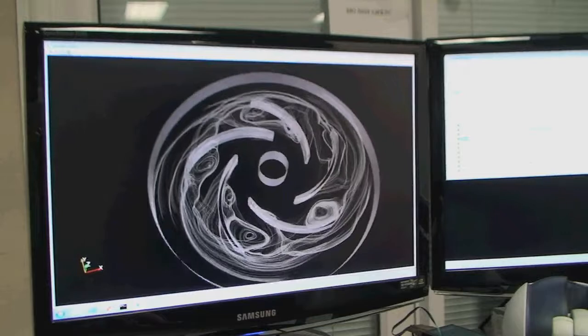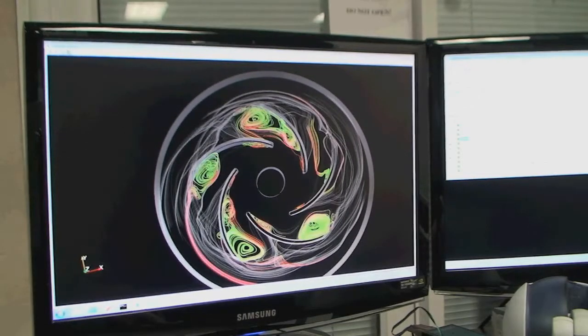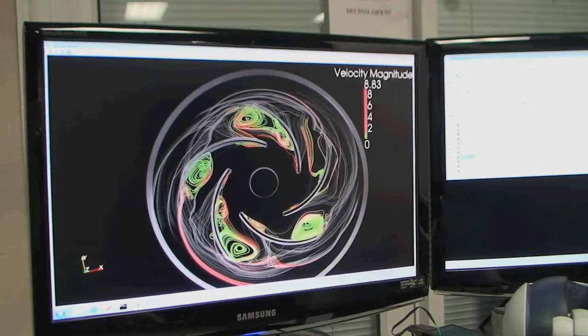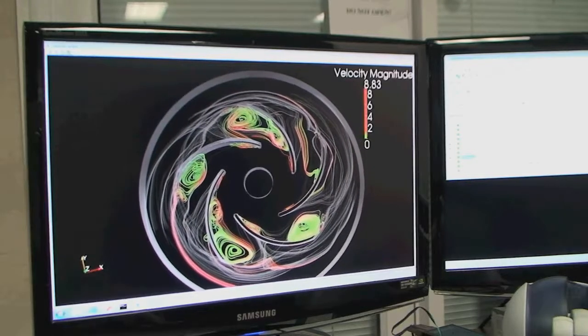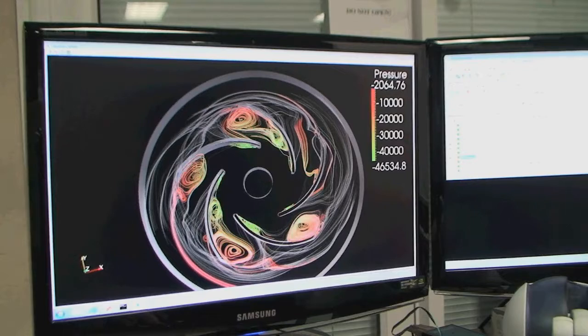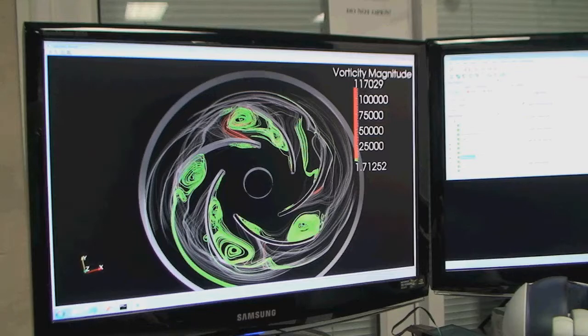The vortical structures can be colored by any scalar field provided in the given dataset. Here, the vortices are colored by relative velocity magnitude. For this dataset, the vortices can also be colored by pressure, kinetic energy, vorticity, and the computed winding angle.